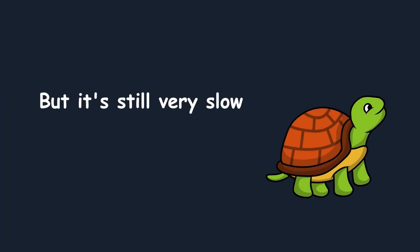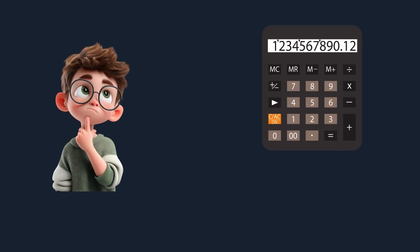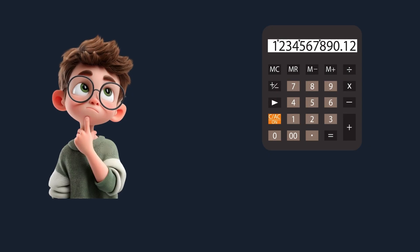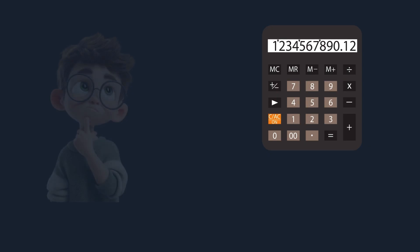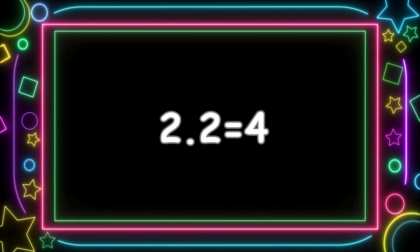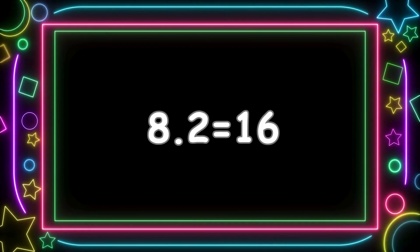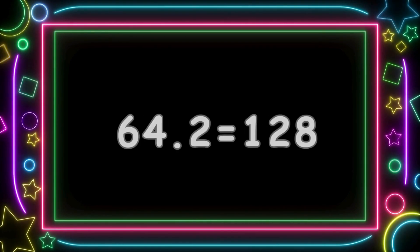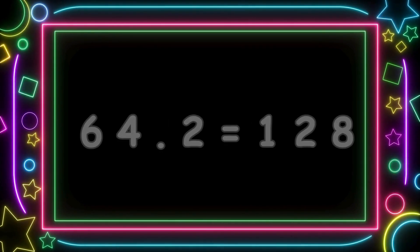But it's still very slow. And if we multiply — which is nothing more than repeated addition — 2 times 2 equals 4, 4 times 2 equals 8, 8 times 2 equals 16, 32, 64, 128, and so on. That's already better, but we can still grow faster.